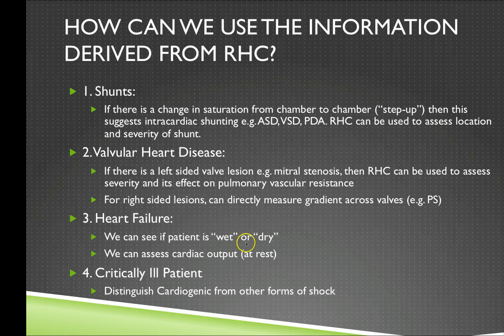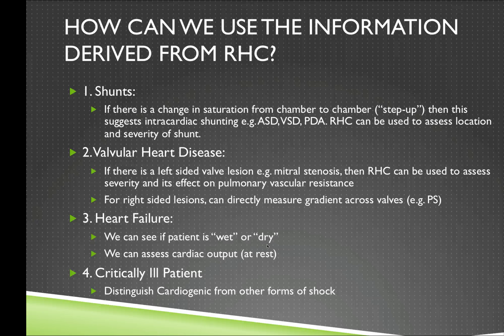In patients with heart failure, we're able to assess the filling pressures within the right ventricle and particularly the pulmonary artery occlusion pressure. If it's elevated, the patient is volume overloaded or 'wet'; if it's low, the patient is dehydrated or 'dry'. We can also directly assess the cardiac output at rest. The right heart catheter is also very useful in the critically ill patient to differentiate between cardiogenic shock and septic or hypovolemic shock. Overall, right heart catheterization is a very useful tool for the cardiologist.